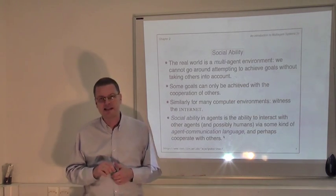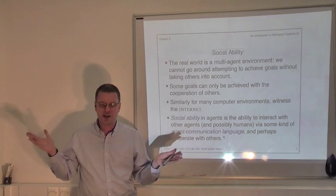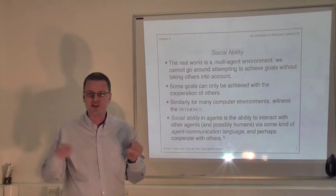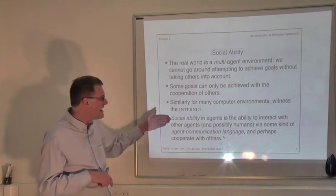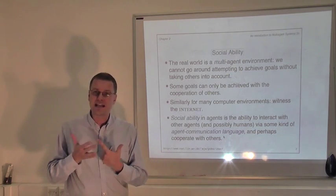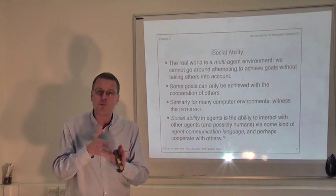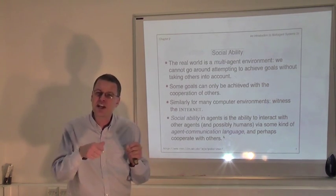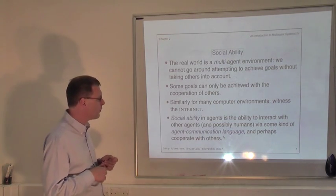The final property I want to talk about is social ability. In a sense social ability is trivial for computers, because everything's connected to the internet and social ability is just communicating. But when we talk about social ability in multi-agent systems, we're talking about something richer than that — not just exchanging bits from one agent to another, but the kinds of social ability we have as humans: the ability to coordinate, to negotiate, and to cooperate with other agents. When you have a goal shared with another agent, the ability to cooperate and work with them; when you need to reach agreement on a matter of common interest, the ability to negotiate.